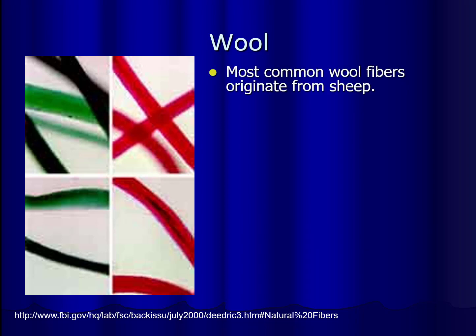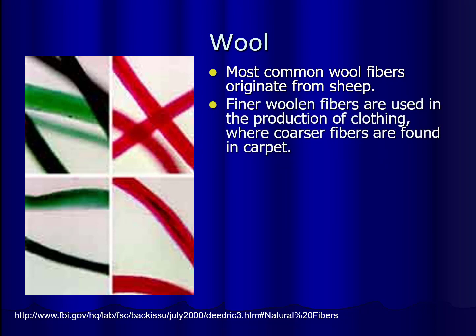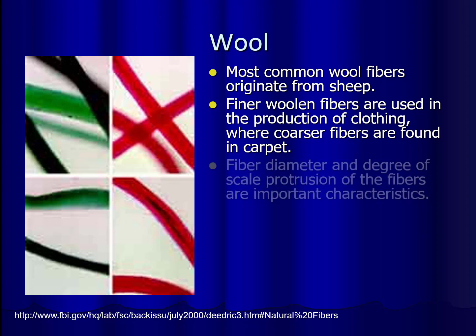Our next fiber is wool. The most common wool fibers originate from sheep — they're basically the hair of a sheep. Something interesting about wool is that the finer the fibers are, the smaller in diameter, the more likely they are to be used in clothing, while coarser fibers are oftentimes found in carpets. So the fiber diameter and the degree of scale protrusion on the fibers are important characteristics.